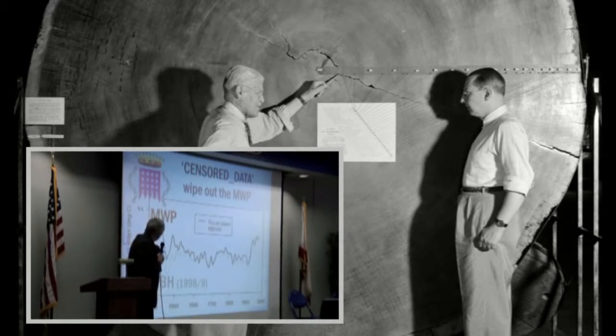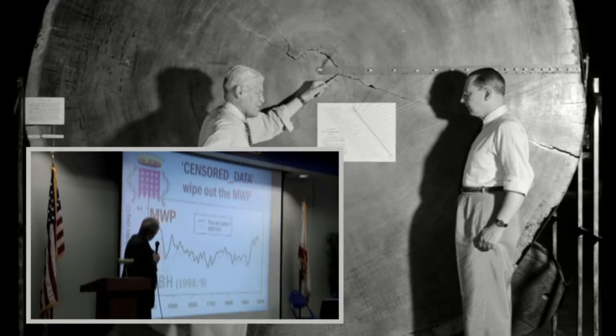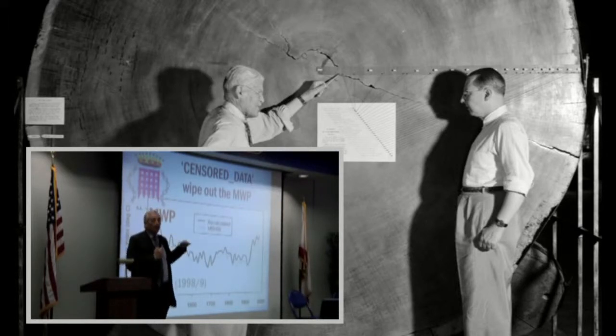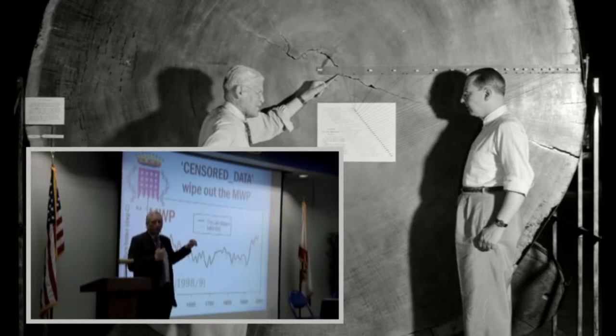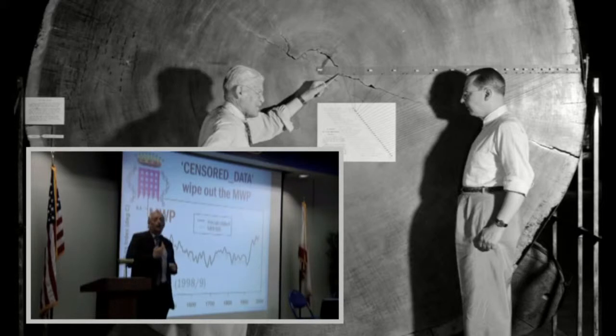There's the line they published in grey, rather faintly there at the bottom, Mann, Bradley and Hughes, MBH. And here is the line that they got when they took out just 20 of those records and all the other records combined, even with the dodges in the computer program, even though they chose only the Northern Hemisphere, all the other dodges still in place. The medieval warm period kept on reappearing.